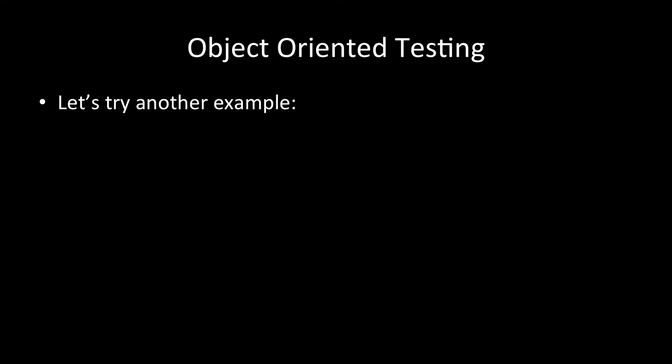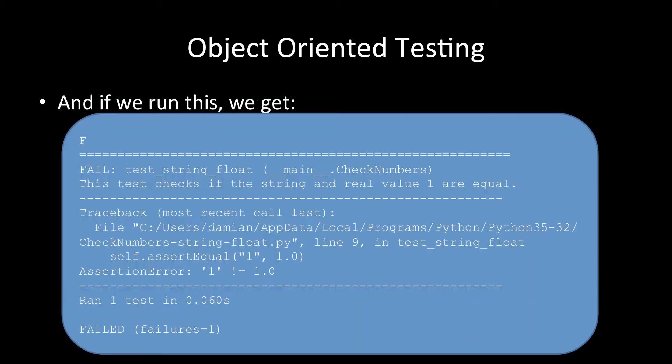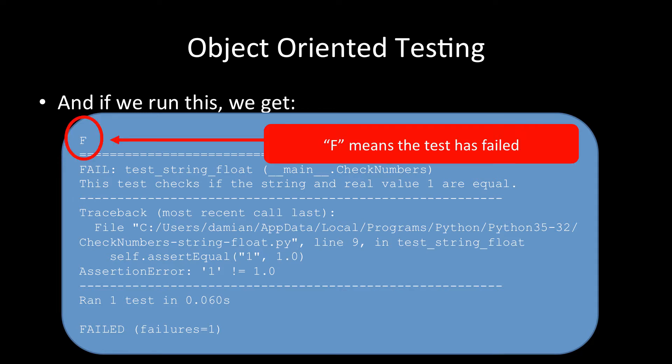Let's try a different one where the test will fail. Let's use the exact same code but instead of comparing an integer to a real number let's compare a string to a float. So the string "1" is that the same as 1.0 and we know that is not the case. If we run that exact bit of code what we get is F equals fail. We get a big bunch of information but the assertion error is string one is not equal to 1.0 and it says we ran one test for 0.060 seconds and there's one failure. Crucially what tells us there's a failure is the F up here. The F means this test failed.